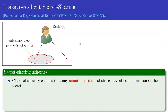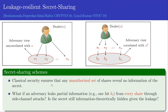Let me start with the notion of leakage resilience secret sharing. In a classical setting, a dealer takes a secret S and samples N random shares S1, S2, ..., SN. The security guarantees that any unauthorized set of shares reveals no information about the secret. What if an adversary leaks some information from every share? For example, it leaks one bit BI from every share SI.